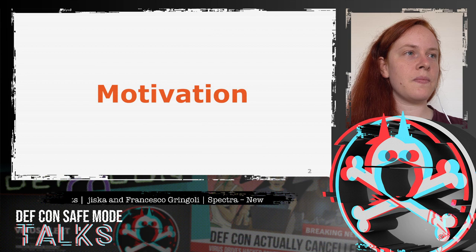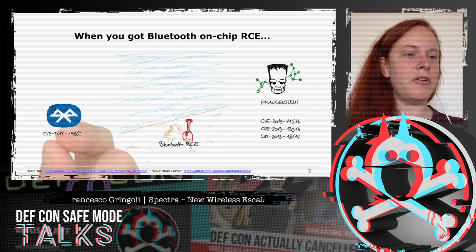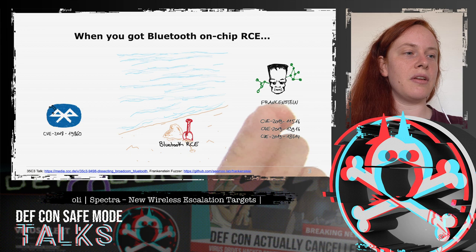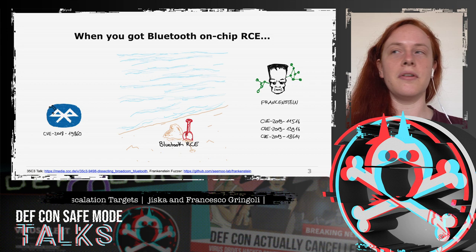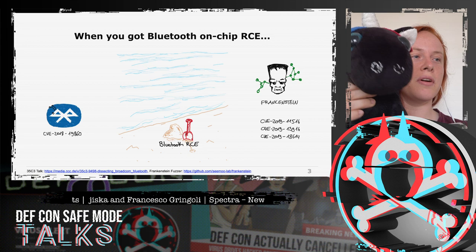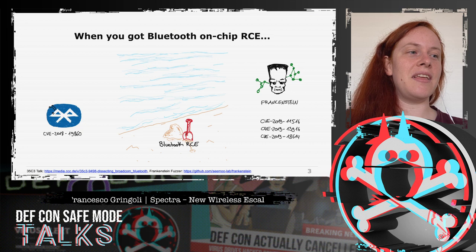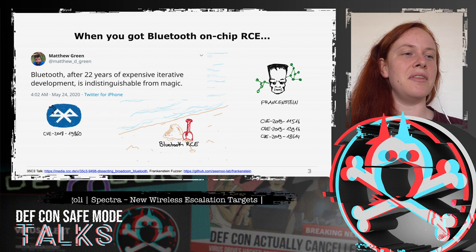The motivation is simple. A partial Bluetooth RCE was found, and then a student, Jan, built Frankenstein which emulates the Bluetooth chips and found a couple more remote code executions. The plan was to tour the world showing off Bluetooth RCE, but people weren't too surprised — Bluetooth after 22 years is really indistinguishable from magic and they kind of expected it to be broken.